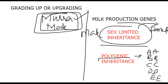The question arises: how do we know if a particular male has good milk production genes, since there is no gene expression in males? Milk production genes are present in the bull also, but there is no expression in the male.